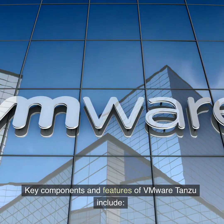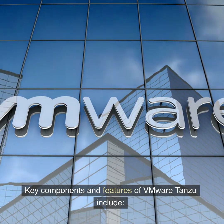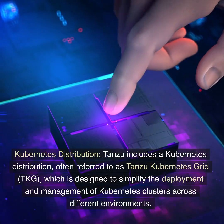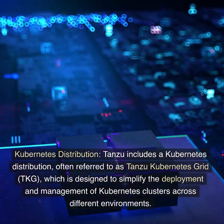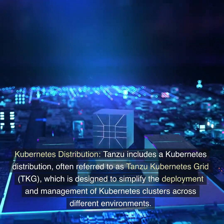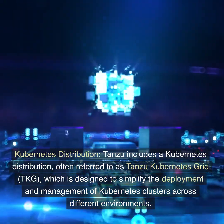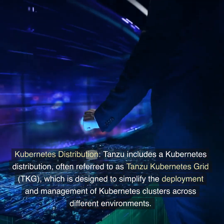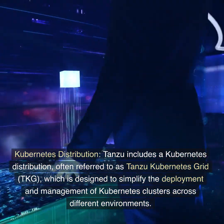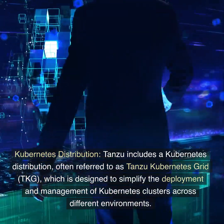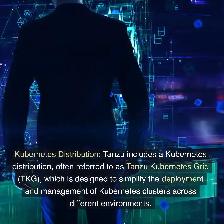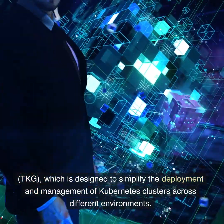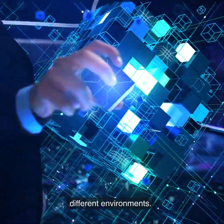Key components and features of VMware Tanzu include Kubernetes distribution. Tanzu includes a Kubernetes distribution, often referred to as Tanzu Kubernetes Grid (TKG), which is designed to simplify the deployment and management of Kubernetes clusters across different environments.